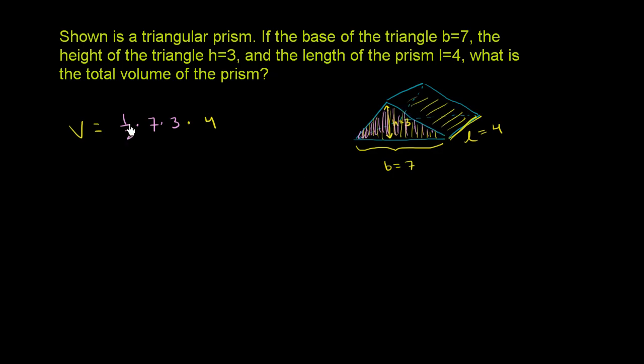And we get, let's see, 1 half times 4 is 2. So these guys cancel out. You'll just have a 2. And then 2 times 3 is 6. 6 times 7 is 42.